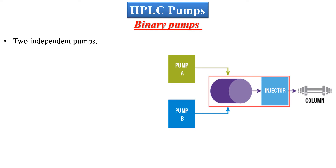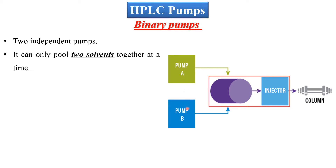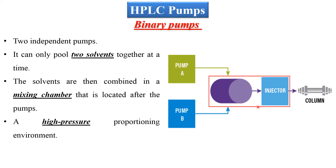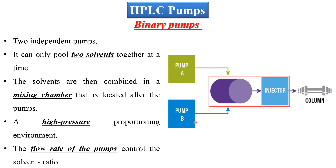As we can see in the design of this binary pump, there are two independent pumps, so it can only deliver two solvents at a time. The solvents are mixed in the mixing chamber before being injected into the column. We can consider this design a high pressure environment, and the flow rate of the two pumps will control the ratio of the solvents delivered into the column.